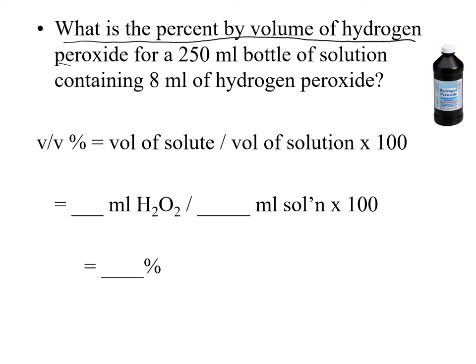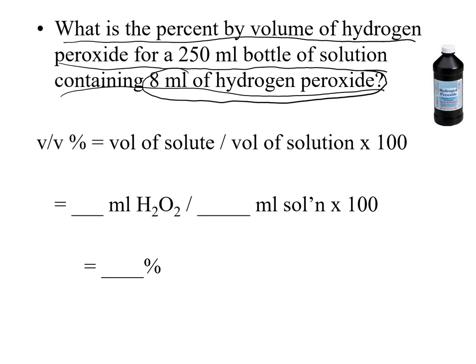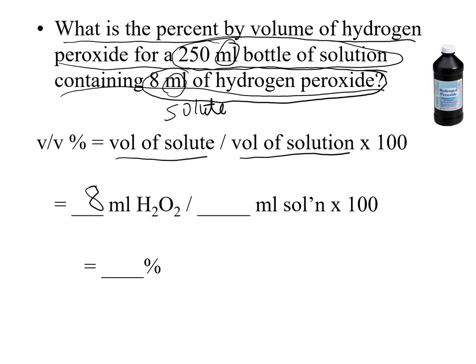What is the percent by volume of hydrogen peroxide in a 250 mL bottle of solution containing 8 mL of hydrogen peroxide? The smaller amount — 8 mL of hydrogen peroxide — is the solute. The formula is volume of solute divided by volume of solution times 100. Both are in milliliters, so the units match. We have 8 mL ÷ 250 mL × 100 = 3% — which is the concentration of hydrogen peroxide typically found in a home medicine cabinet.